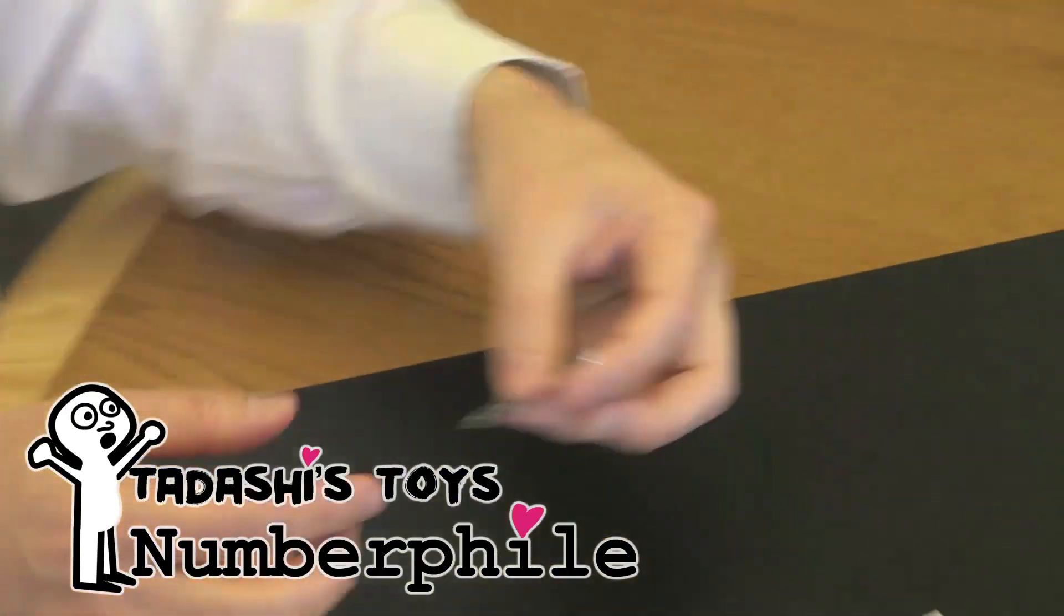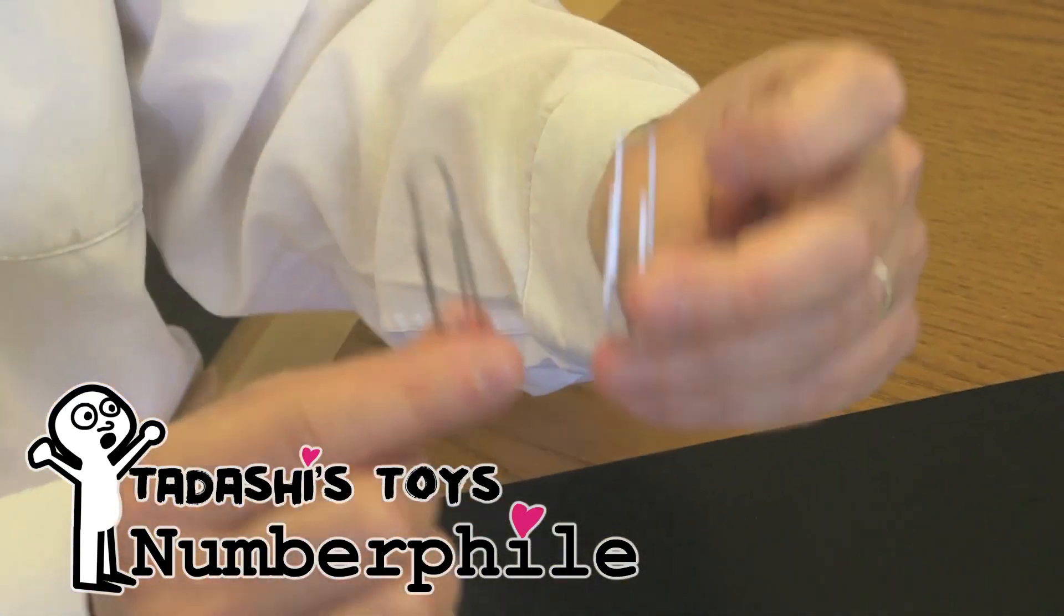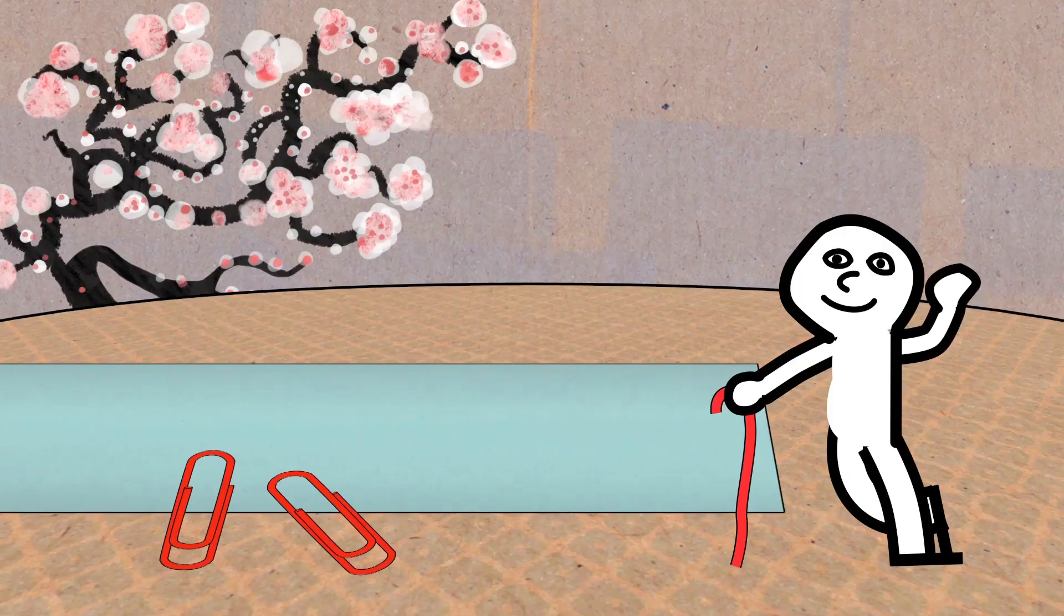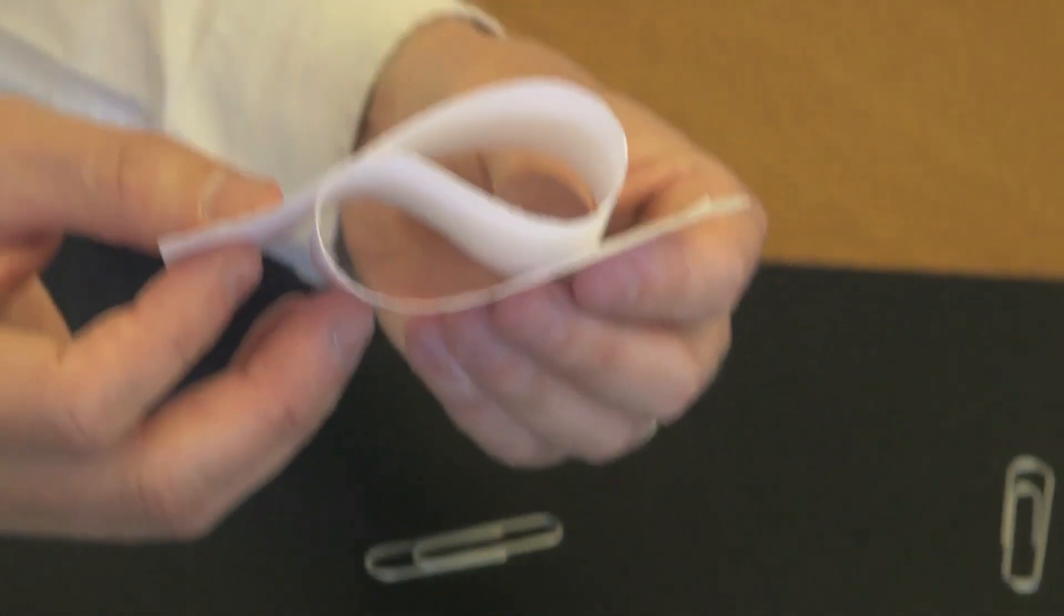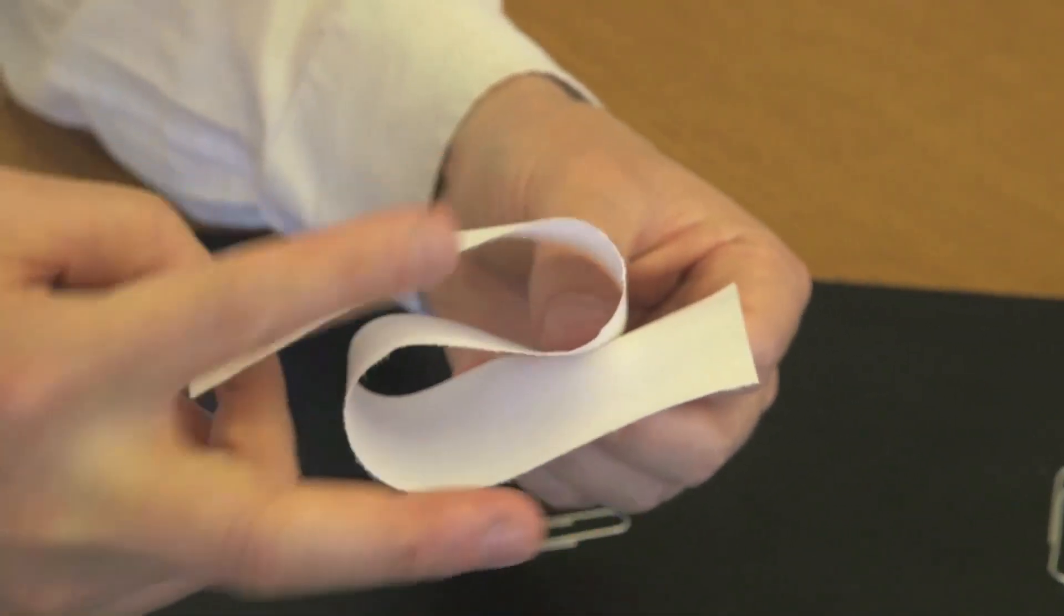A strip of paper, a paper ribbon, and two ordinary paper clips. We bend the paper strip in a Z or S shape, like so, going, winding about like that.